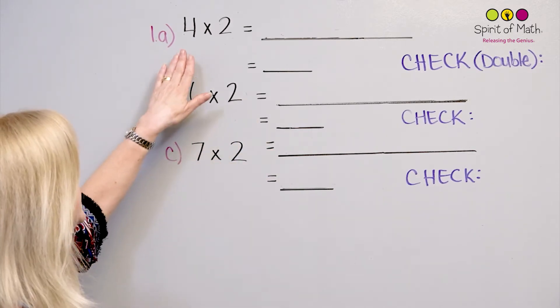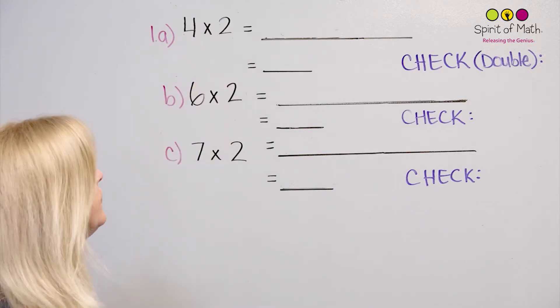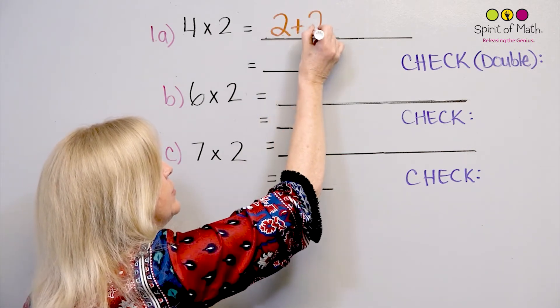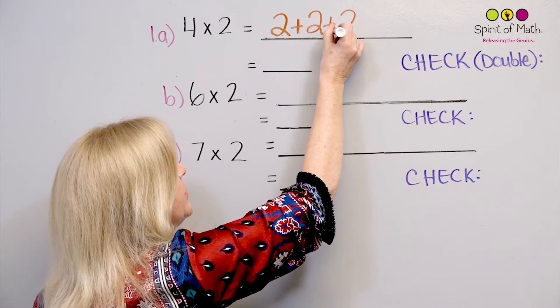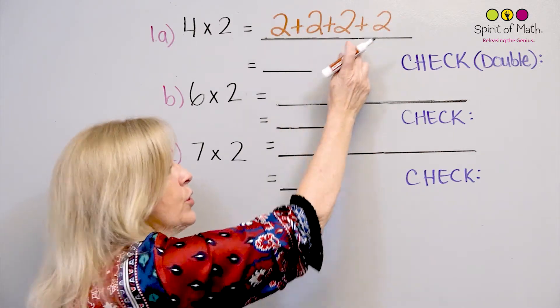Okay, so now let's look at this. This means 4 groups of 2. So let's look at 4 groups of 2. You add them up. So you have one 2 here, and another 2, and another 2, and another. That is 1, 2, 3, 4 groups of 2.